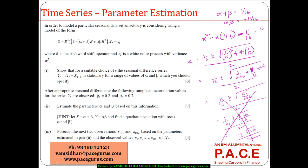So the two parameters are alpha = 0.86 and beta = minus 0.79. That is how we obtain the estimated parameters for this particular expression.